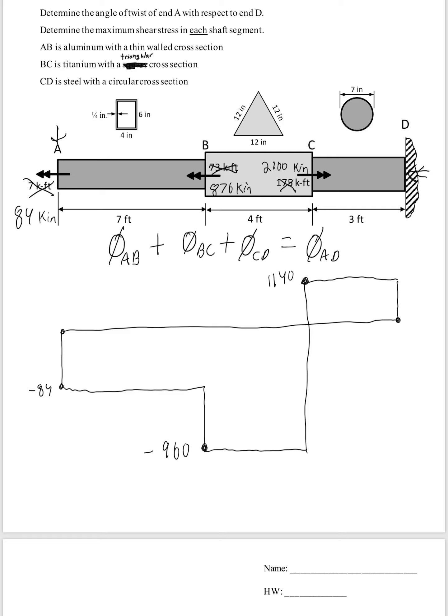So that means the torque in AB is this negative 84. The torque in BC is negative 960. And the torque in CD is going to be a positive 1140. And all those are going to be kip inch.